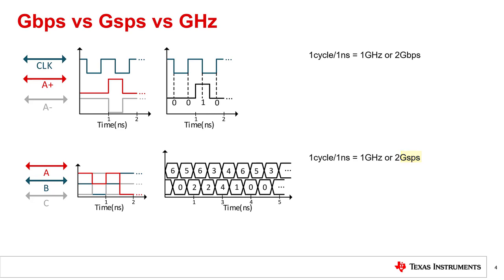This is because the data lanes transmit symbols to be decoded into integers rather than bits directly like in D-PHY. In C-PHY, each time a signal in the trio toggles, the symbol changes. Therefore, the data rate per lane is also twice the frequency.